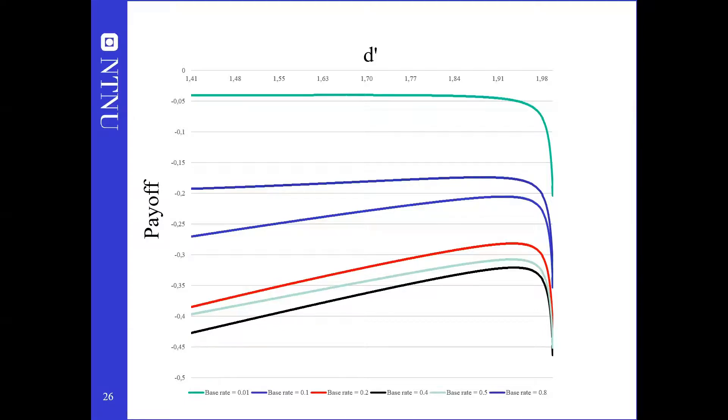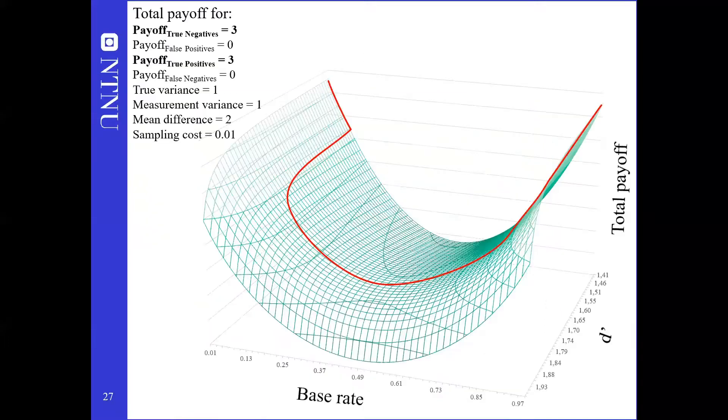Here we show the total payoff calculated as the sum of cost of mistakes, benefit of correct decisions and sampling costs for a few different base rates. The uppermost line for a base rate of 0.01 shows that the maximal payoff is achieved by stopping to sample immediately after the first one. The lowest line for base rate 0.4, given the parameters in this example, shows a case where it's best to sample a lot. To make the relationship between these maxima and base rates clearer, we plot them as a surface. Then for each base rate the optimal sampling corresponds to d' that provides the maximal payoff. These are shown here by the red line.